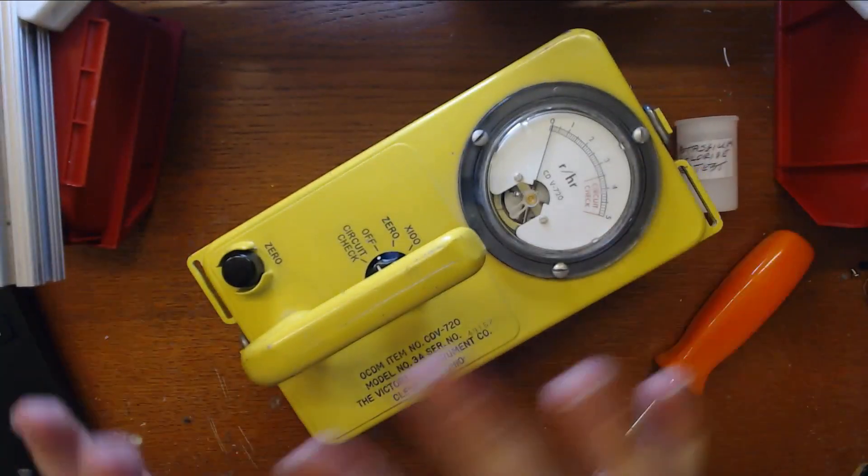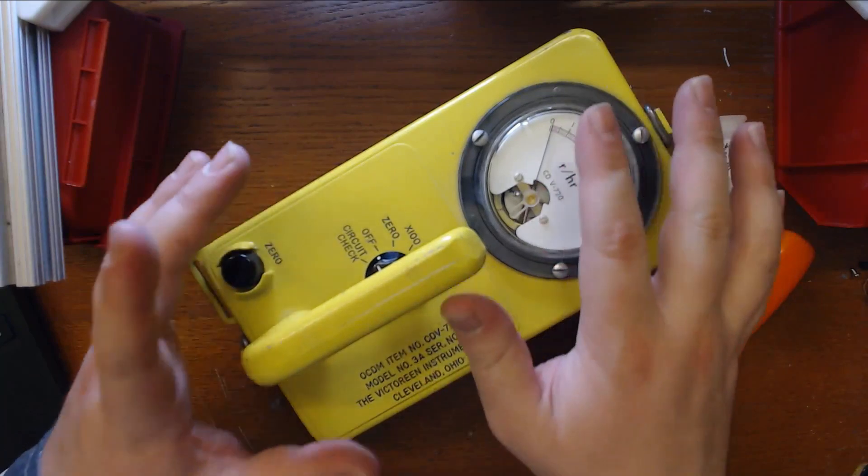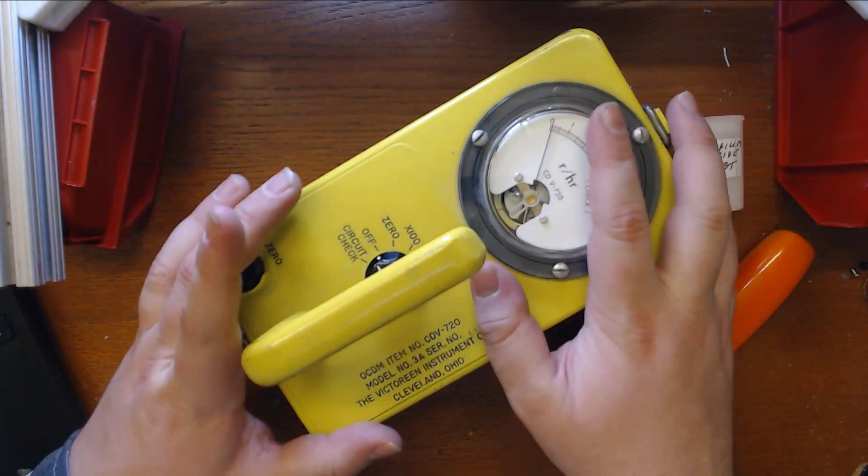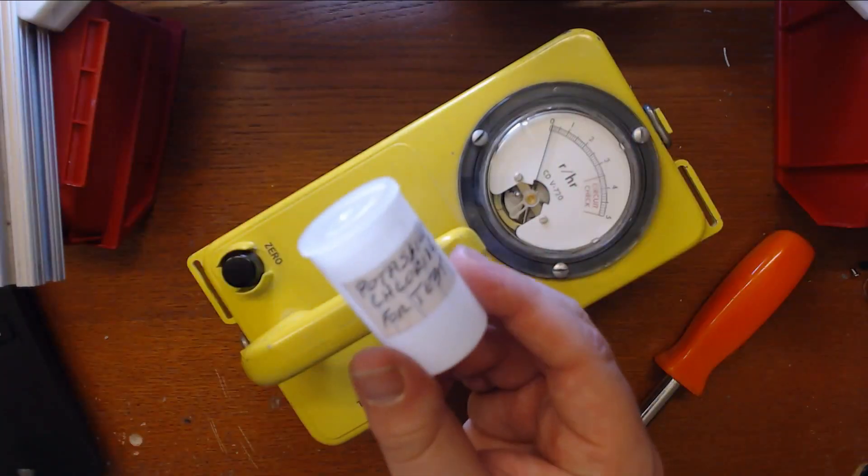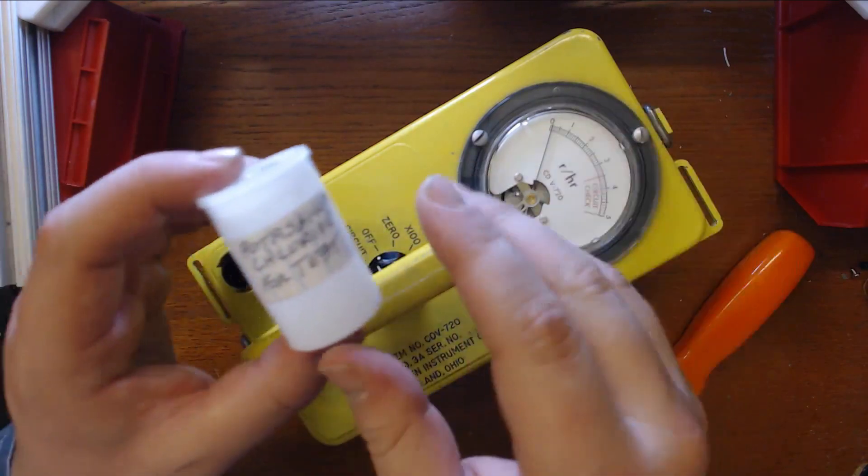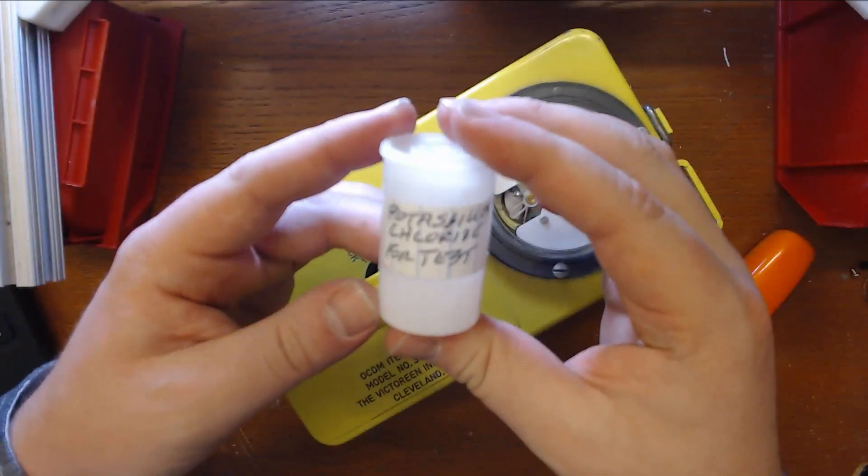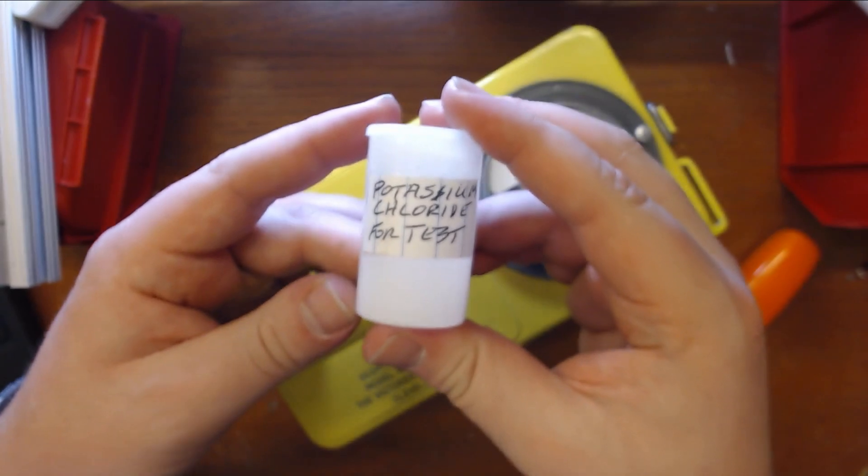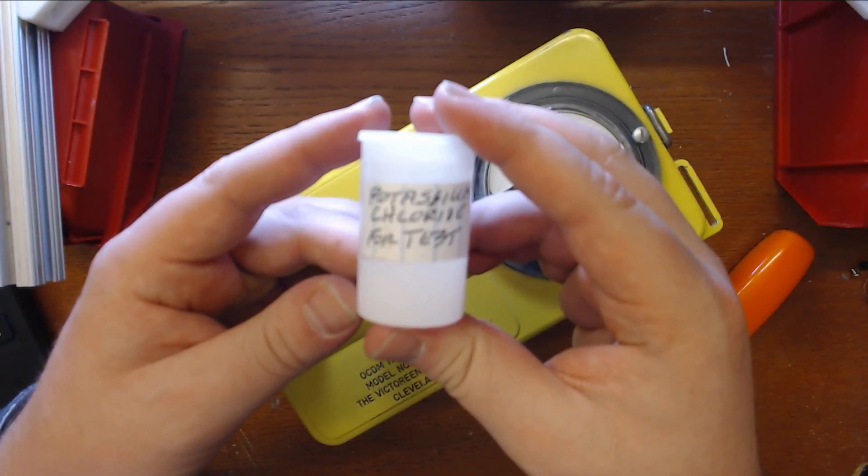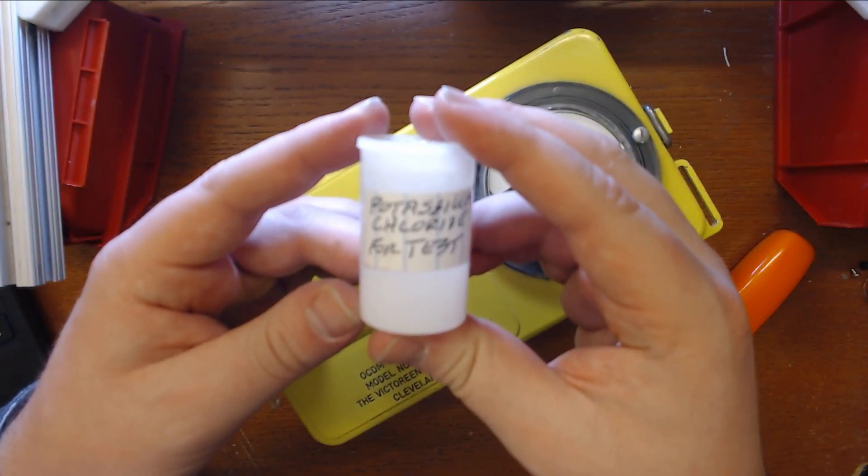I haven't put any batteries in this thing yet, so I have no idea if it worked, but I thought I'd just show the front of it before I did it just in case this thing turns into smoke. I also got from the same guy who sold me this, who has no idea if this works, a nathety little vial of potassium chloride. It's potassium chloride for test, so assuming this thing works, we'll have to give that a look and see if it'll actually detect anything.